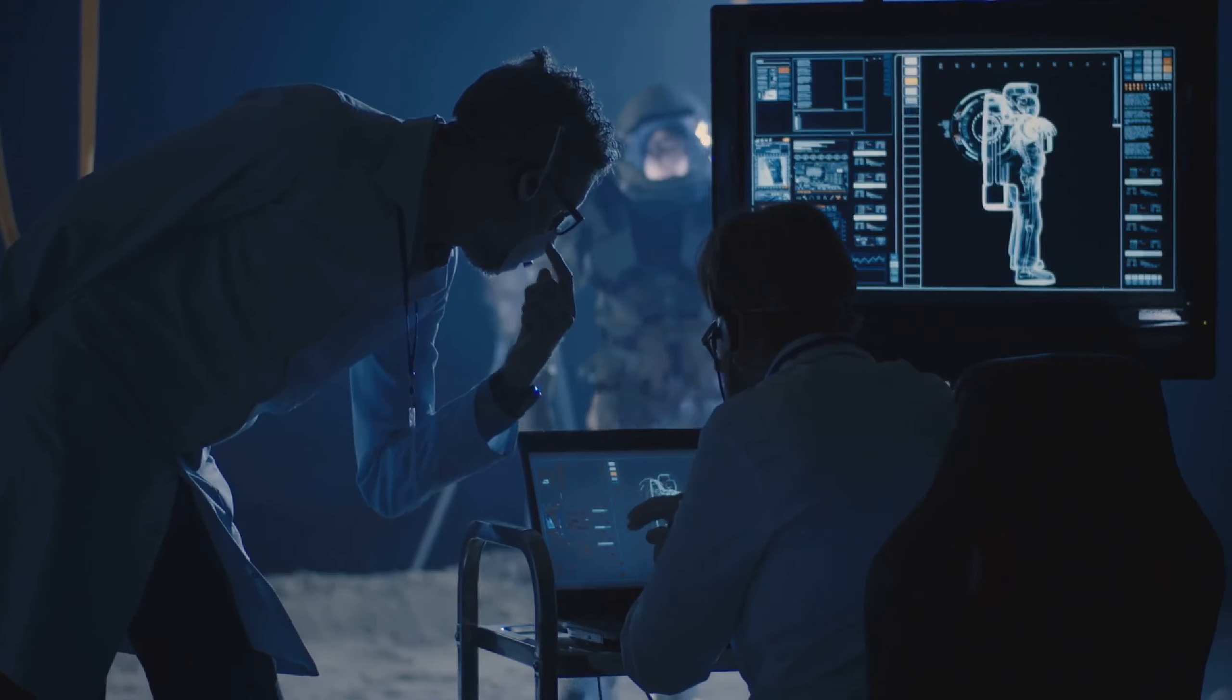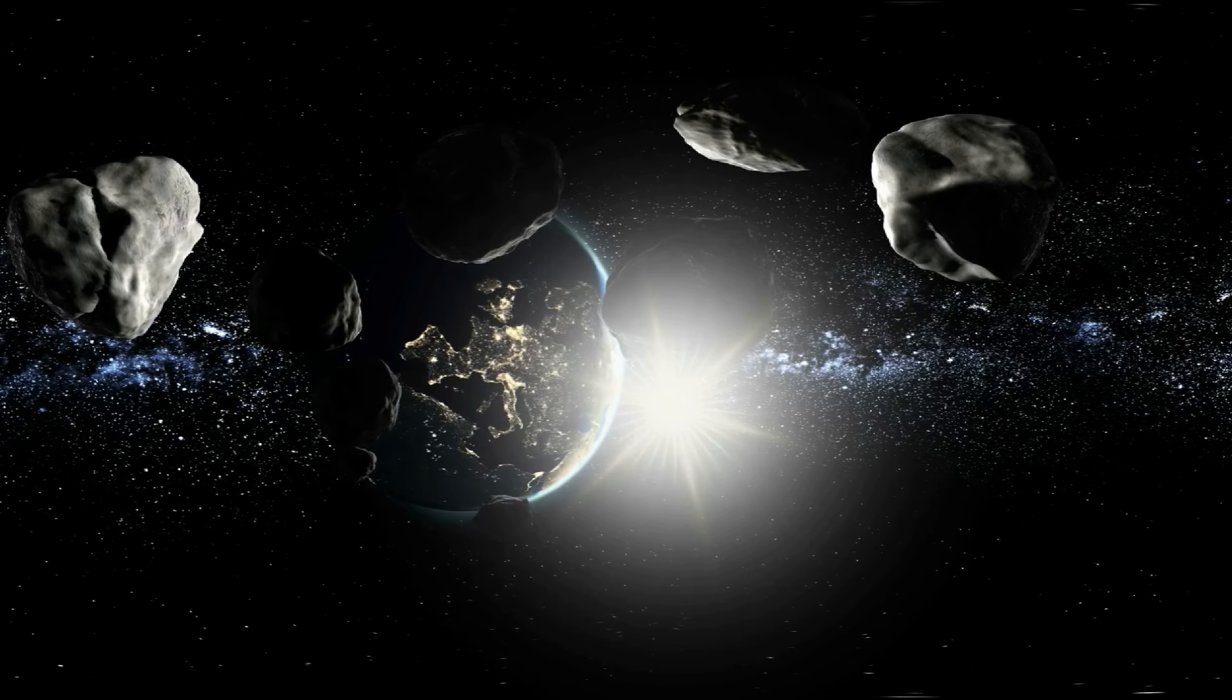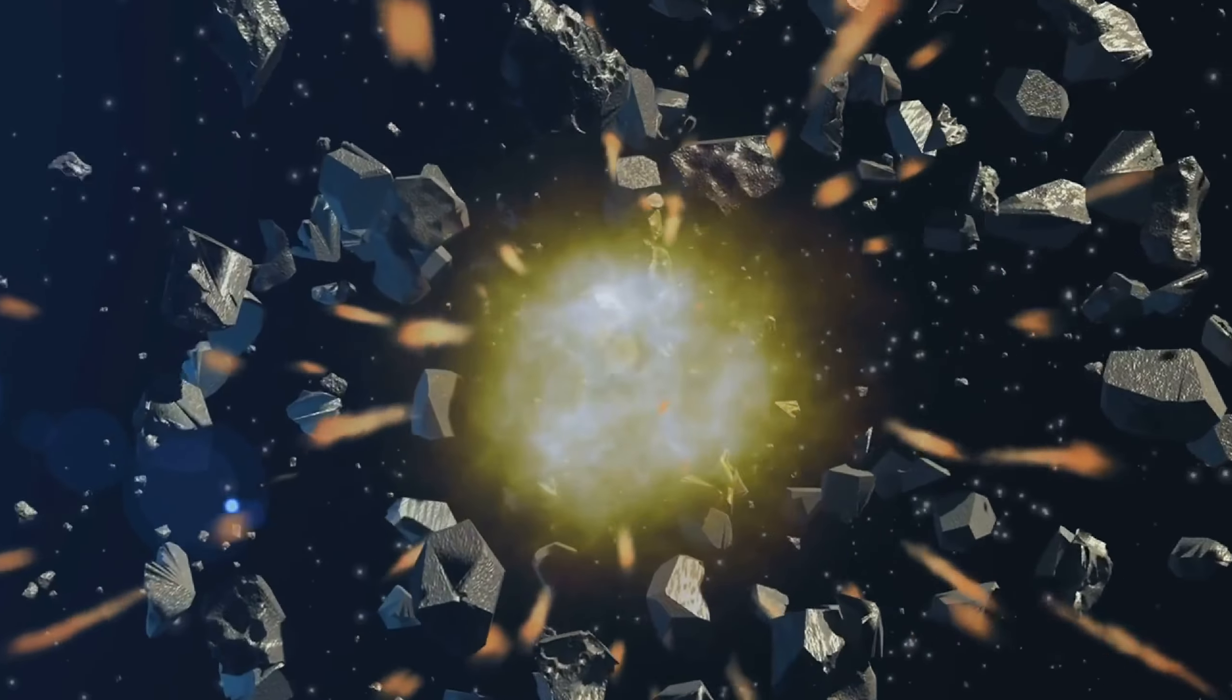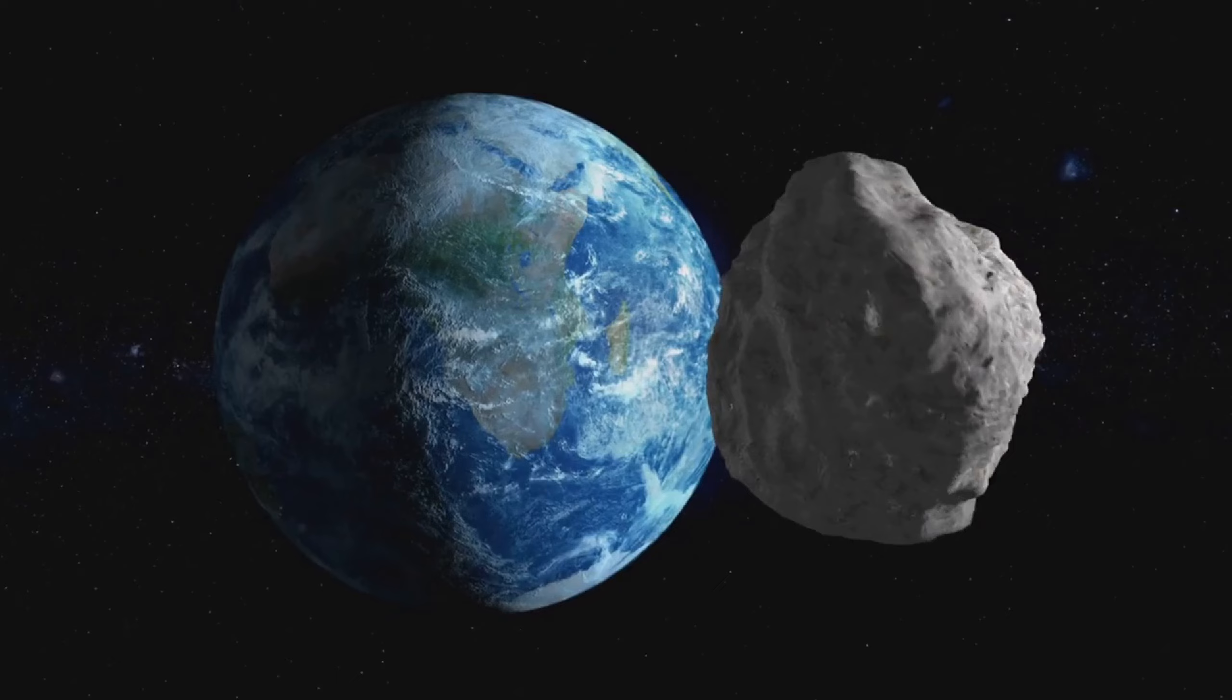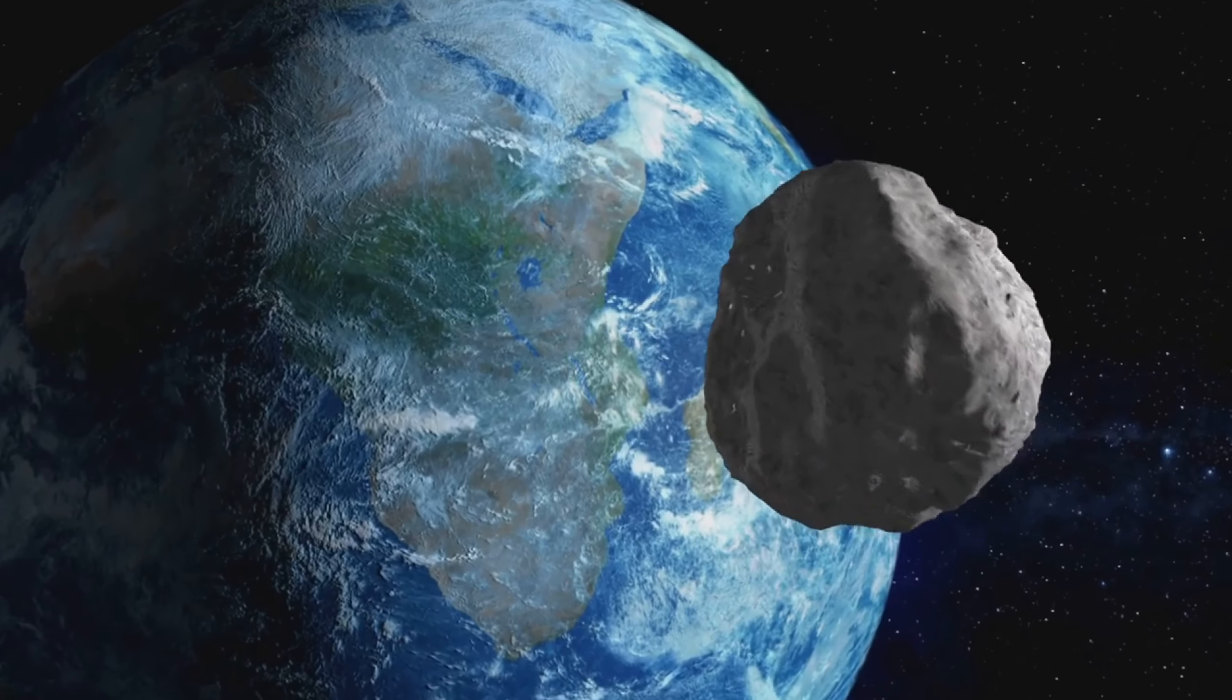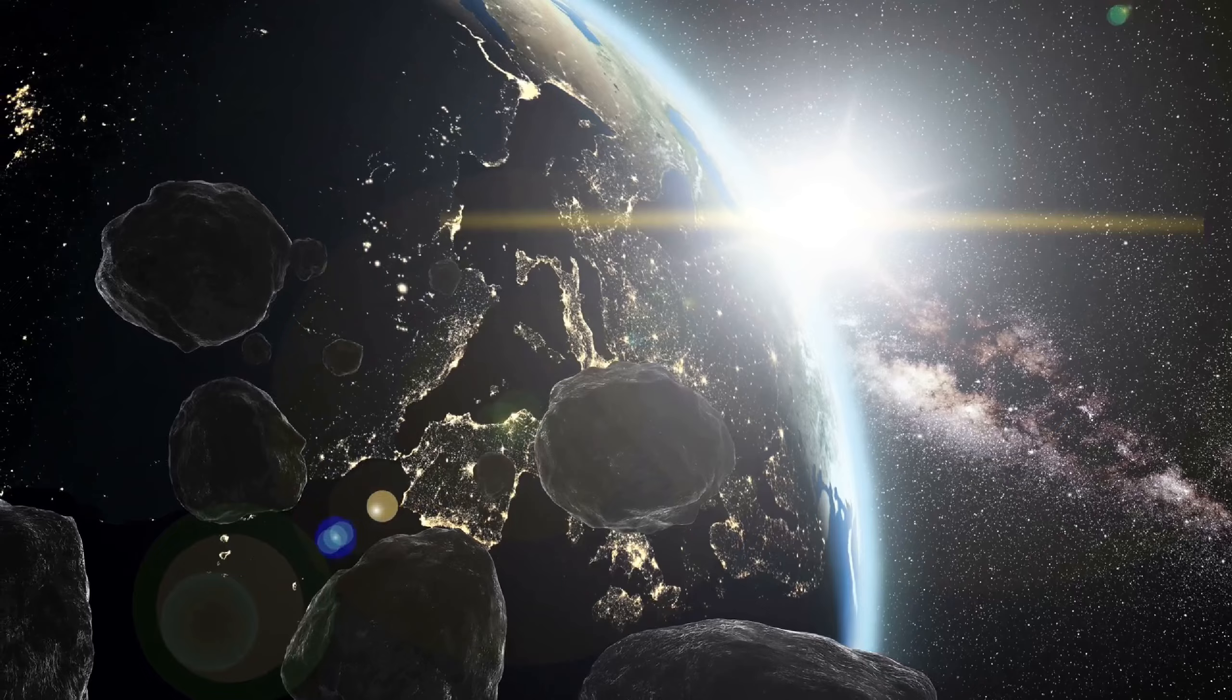To understand the true risk, Wiegert and his team delved deep into the probabilities. Their calculations showed that the chances of an asteroid striking Apophis between now and 2029 are exceptionally low, less than one in two billion. For a smaller object that might redirect Apophis toward a later collision, the odds drop to less than one in a million. These are astronomically low numbers emphasizing the rarity of such an event. However, the mere existence of such a possibility, no matter how remote, adds a layer of intrigue to the story of Apophis.